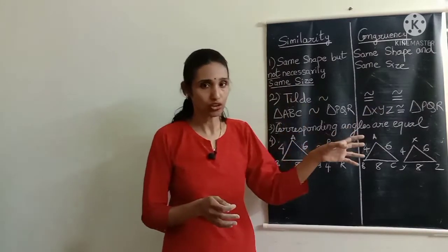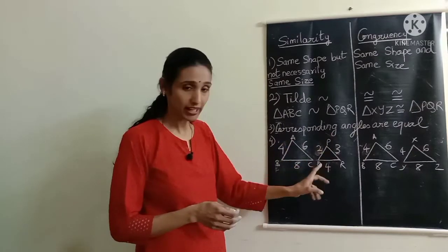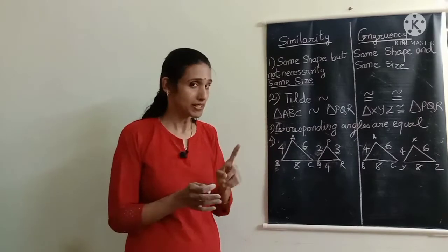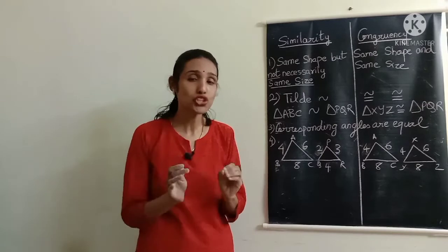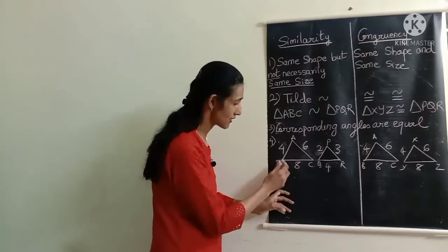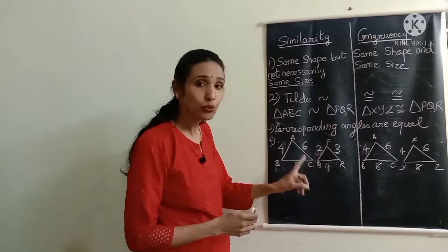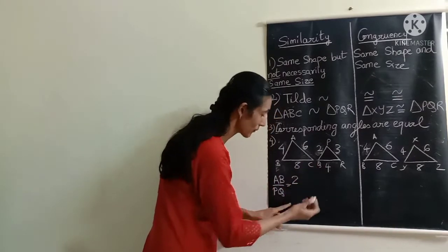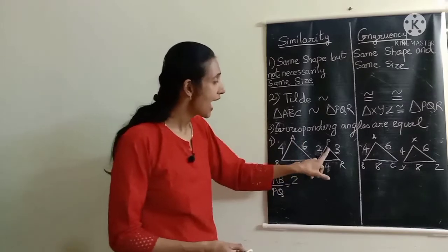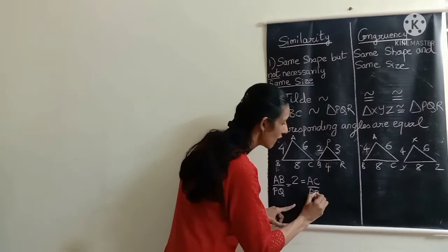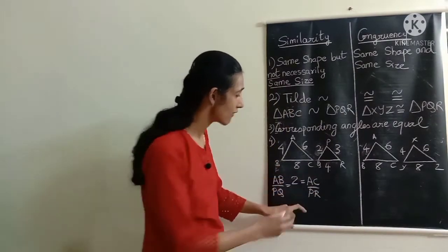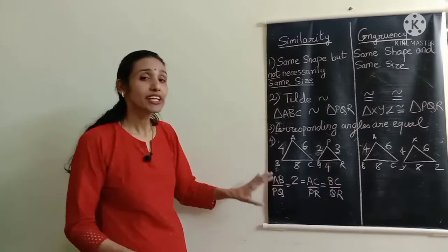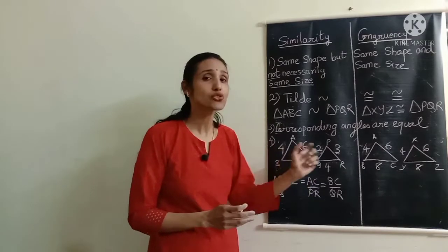Now let's talk about the sides in similar and congruent figures. For two figures to be similar, it is not compulsory that the corresponding sides be equal, but it is important that the corresponding sides be proportional to each other. For triangle ABC and triangle PQR: AB is 4 and PQ is 2, so AB/PQ = 2. AC is 6 and PR is 3, so AC/PR = 2. And BC/QR also gives a ratio of 2. Since all corresponding sides are proportional, these two triangles are similar.